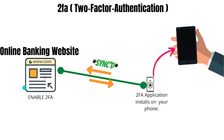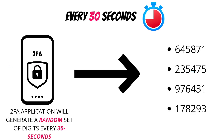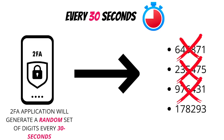At a basic level, how exactly does 2FA work? All it does is generate a random set of digits every 30 seconds. After 30 seconds, the first set of digits will expire, followed by the next, and the next, and so on.